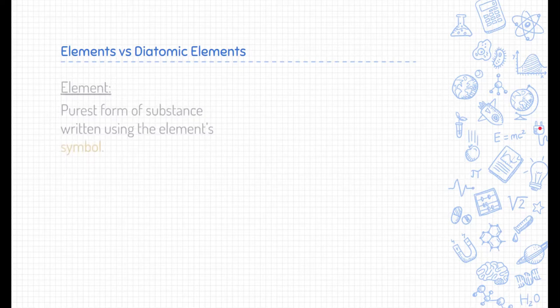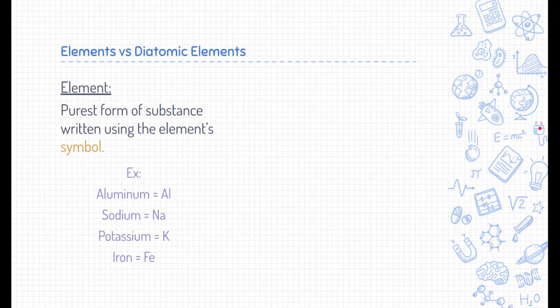Let's start with elements. Elements are the purest form of a substance and we can find them on the periodic table. They're typically written using the element symbol. For example, here are aluminum, sodium, potassium, and iron and their symbols. So in a chemical reaction, if we had one of these substances in their purest form, we could just write their symbols as you see on the periodic table.